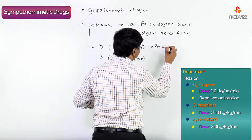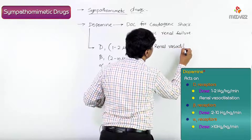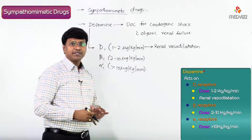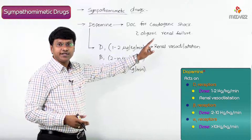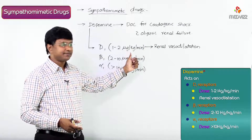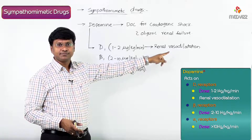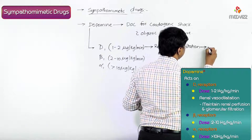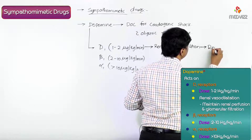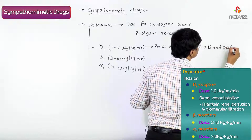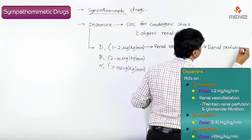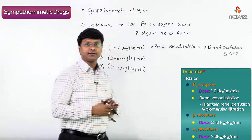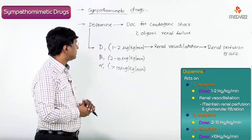When dopamine acts on D1 receptors, it causes renal vasodilatation. This renal vasodilatation thereby maintains renal perfusion and GFR.